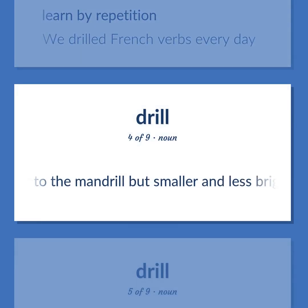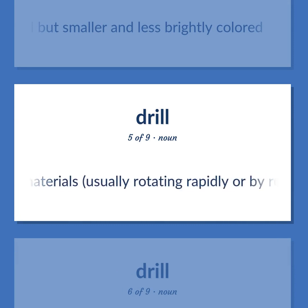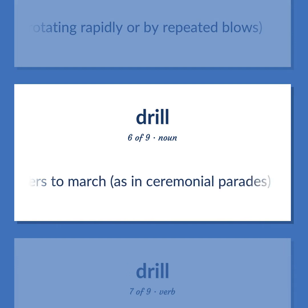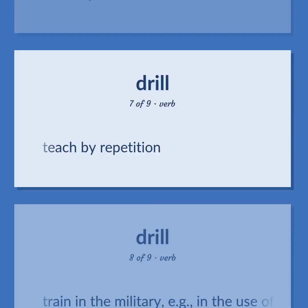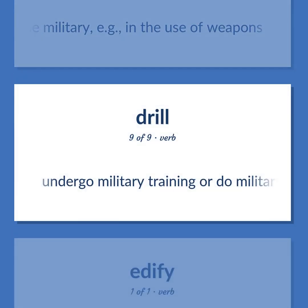Similar to the mandrel but smaller and less brightly colored. A tool with a sharp point and cutting edges for making holes in hard materials, usually rotating rapidly or by repeated blows. Military: the training of soldiers to march, as in ceremonial parades, or to perform the manual of arms. Teach by repetition. Train in the military, e.g., in the use of weapons. Undergo military training or do military exercises.